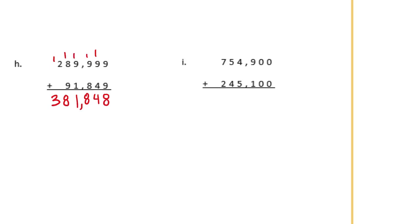Problem I: 0 plus 0 is 0; 0 plus 0 is 0; 9 plus 1 is 10 — carry the 1; 1 plus 4 plus 5 is 10 — carry the 1; 1 plus 5 plus 4 is 10 — carry the 1; 1 plus 7 plus 2 is 10 — carry the 1. Now we would carry the 1, but there's nowhere to carry it, so we just bring it straight down. And we get 1 million.